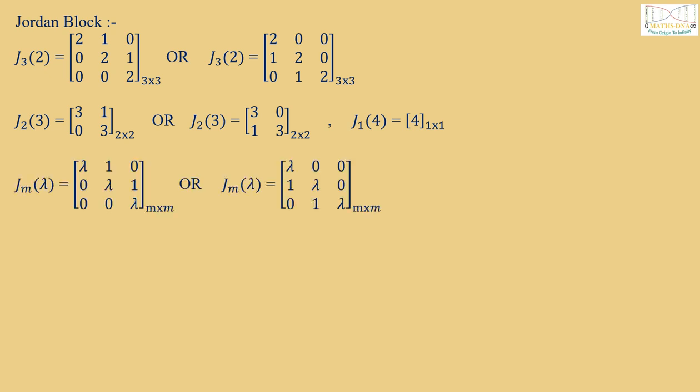Similarly, we can construct J₂(3) or J₁(4). So in general, we can say Jₘ(λ) is an m×m matrix whose diagonal entries are λ, the eigenvalues of the matrix, and above the diagonal or below the diagonal entries are 1.